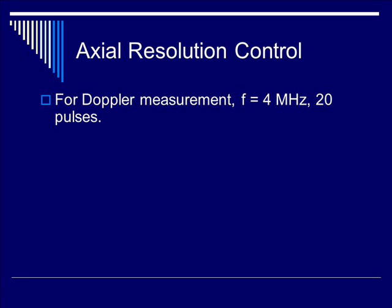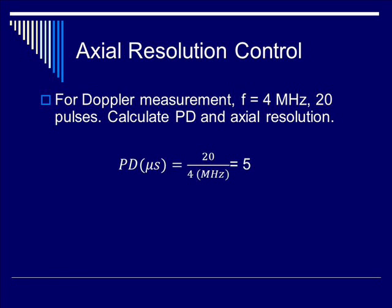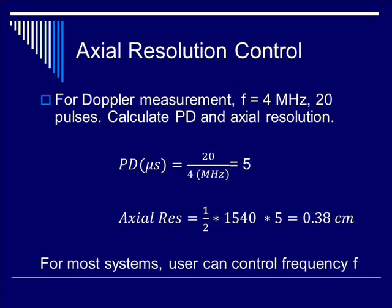Let's do an example. For Doppler measurement, if the frequency of the transducer is 4 MHz and you have 20 pulses, calculate the pulse duration and axial resolution. The pulse duration in microseconds equals 20 divided by 4 MHz, which gives you 5 microseconds. The axial resolution, therefore, is 1.5 times the velocity of sound in tissue — 1540 meters per second — times 5 microseconds, and you end up with 0.38 cm.